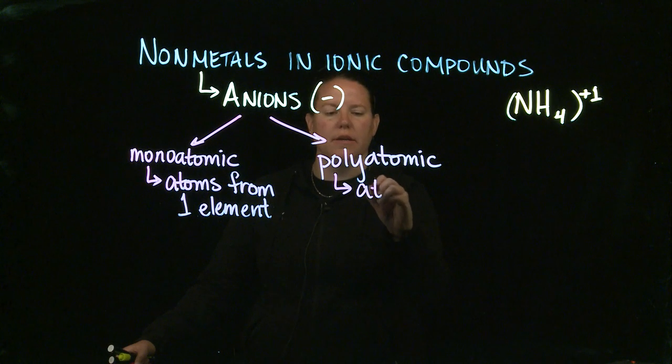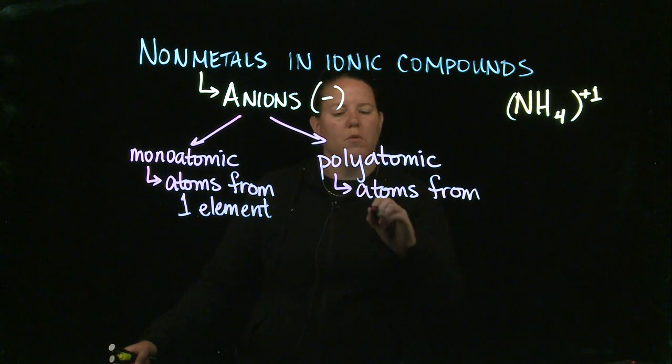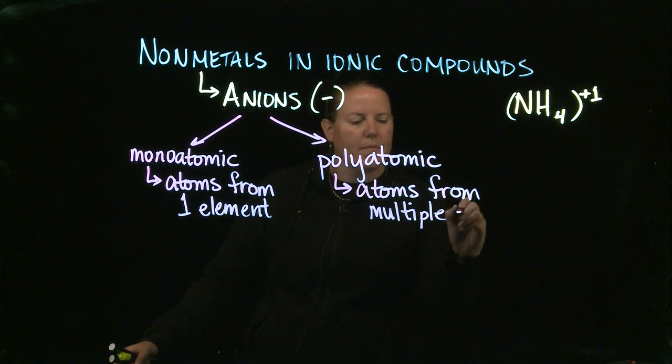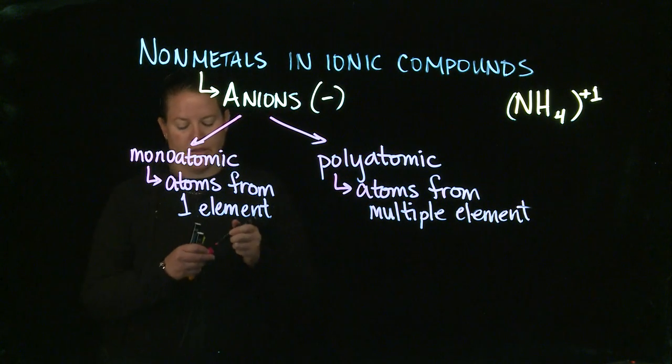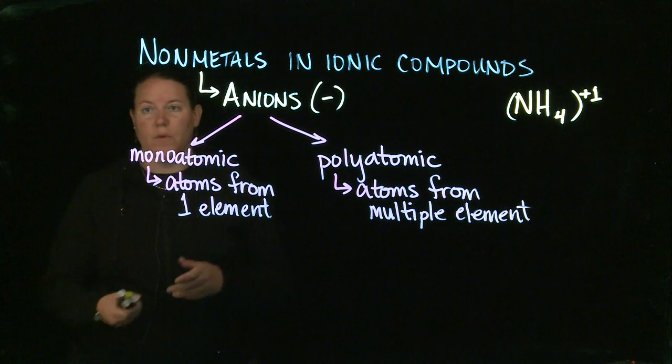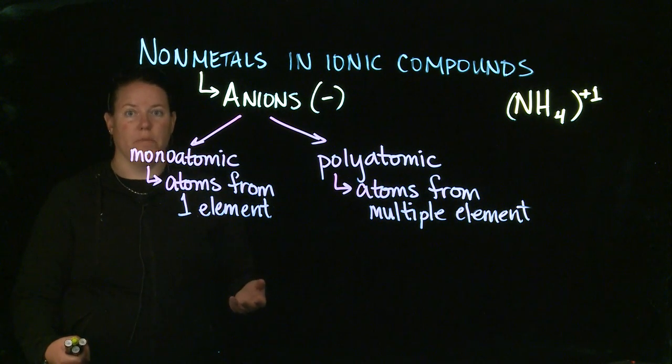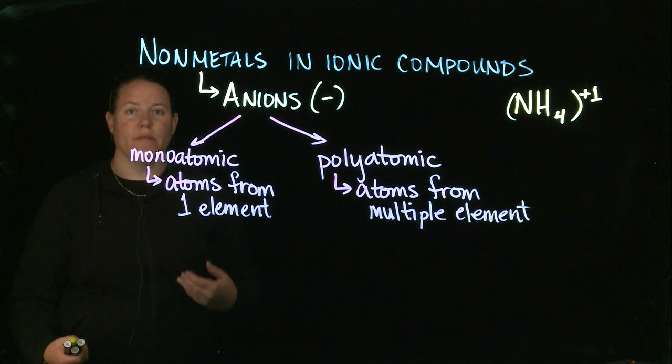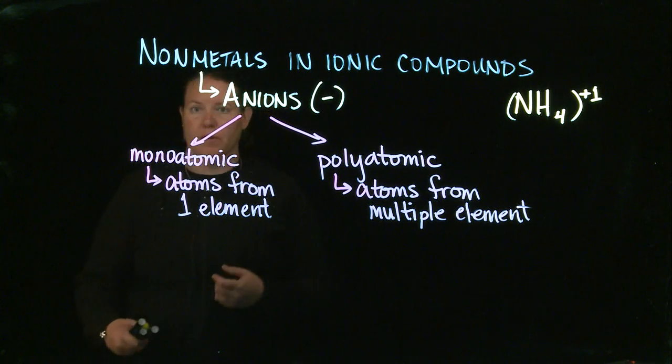Polyatomic really means atoms from multiple elements. How can you tell a monoatomic anion versus a polyatomic anion? When you look after the metal, if there's just one capital letter, that's monoatomic. Because capital letters, every time you have a capital letter, that signifies a new element. Polyatomic would have multiple capital letters.